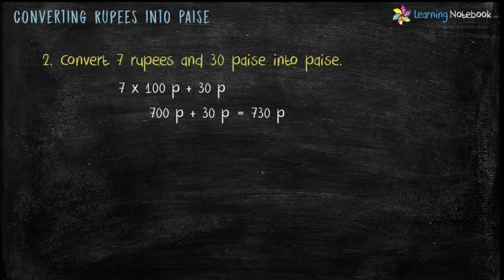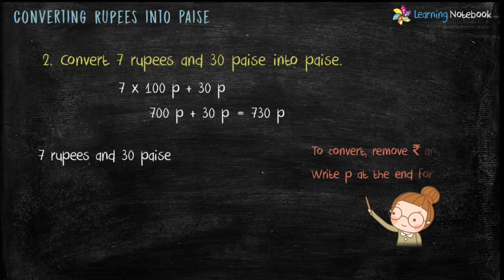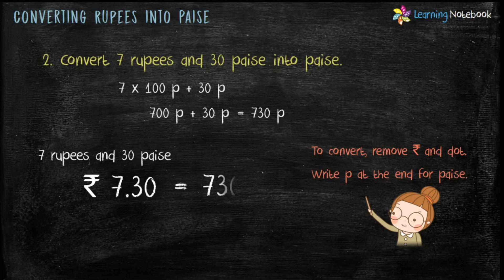There is another way to convert. In figures it is written as Rupees 7.30. To convert, just remove the rupees symbol and the dot, and write P at the end for paise. So Rupees 7.30 equals 730 paise. This is how we convert rupees into paise.